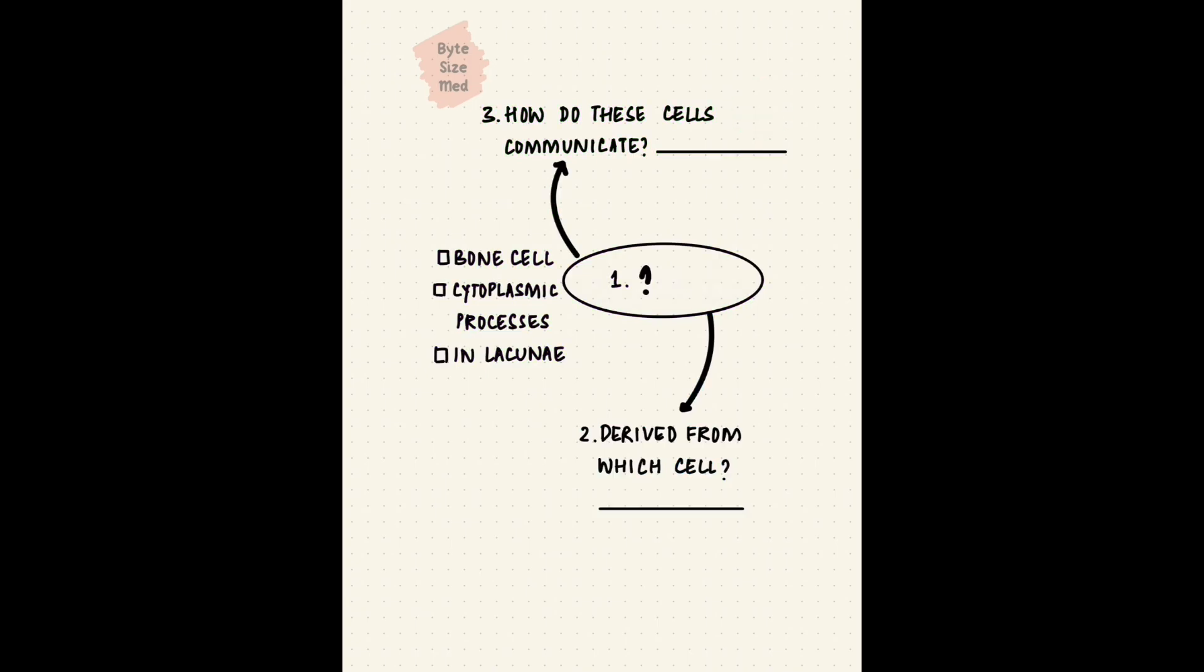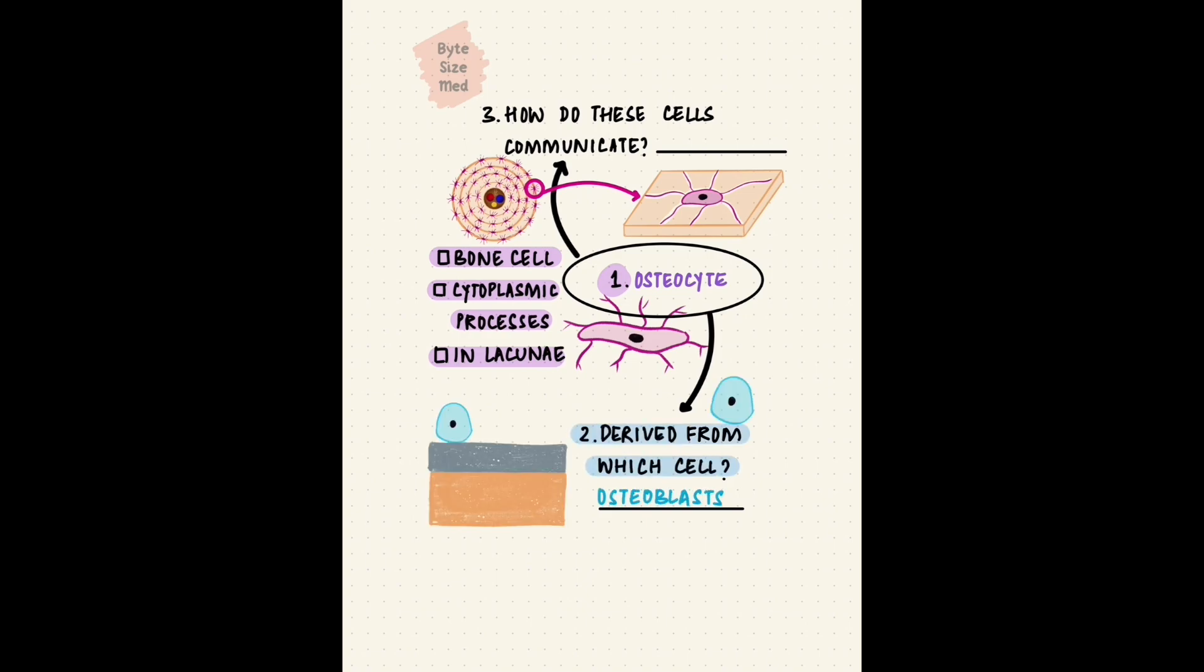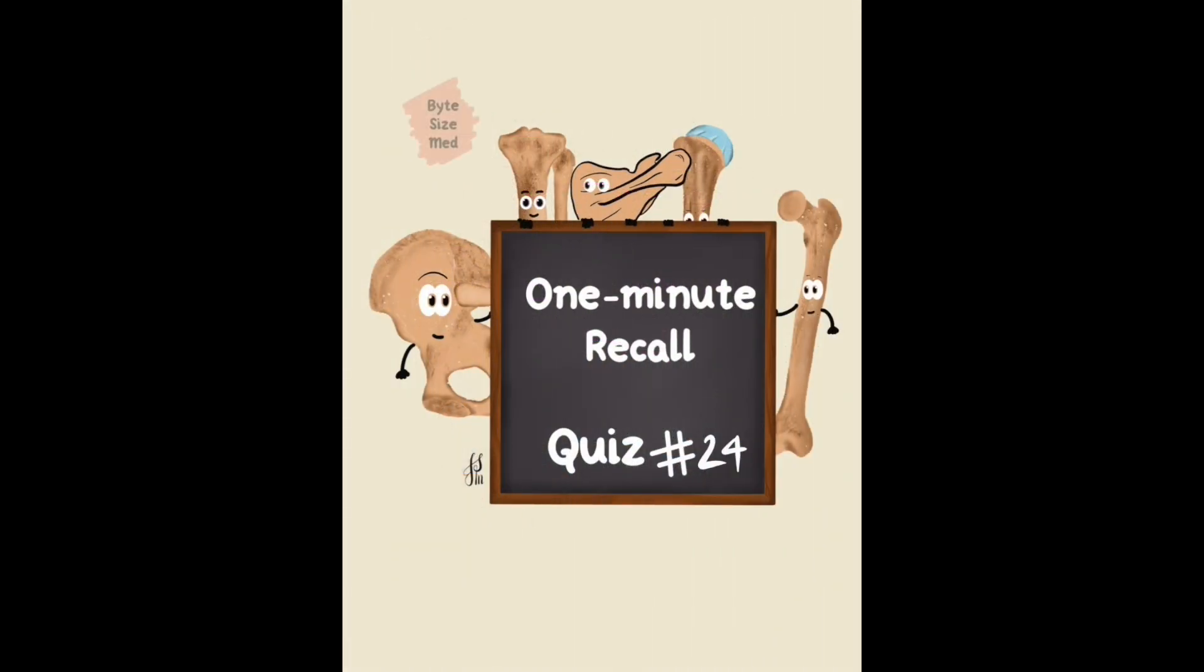Time's up. The osteocytes are located in lacunae, which are spaces between the layers of the bone matrix. They have cytoplasmic processes that sit in canaliculi. These are trapped osteoblasts. Osteoblasts synthesize the bone matrix, and as they do so, some get trapped and form osteocytes. The osteocytes communicate with each other and osteoblasts using gap junctions. Osteoblasts, osteoclasts, and osteocytes - those are three important bone cells.